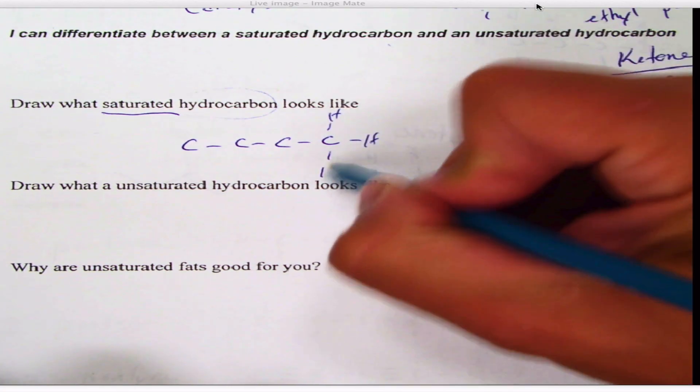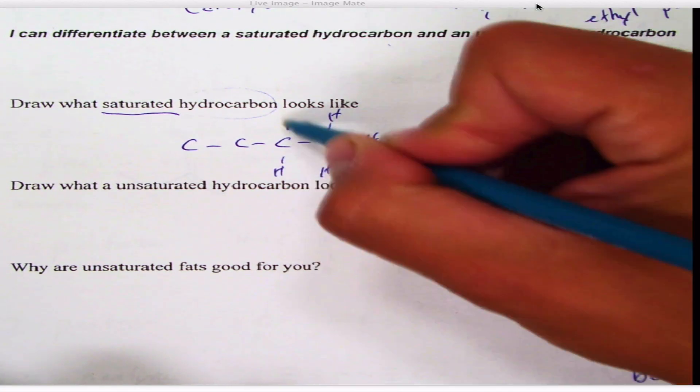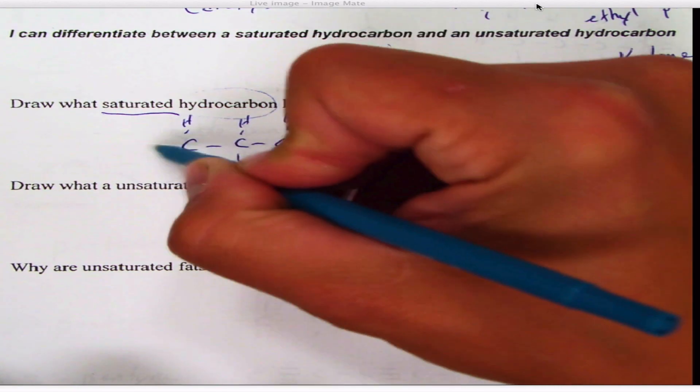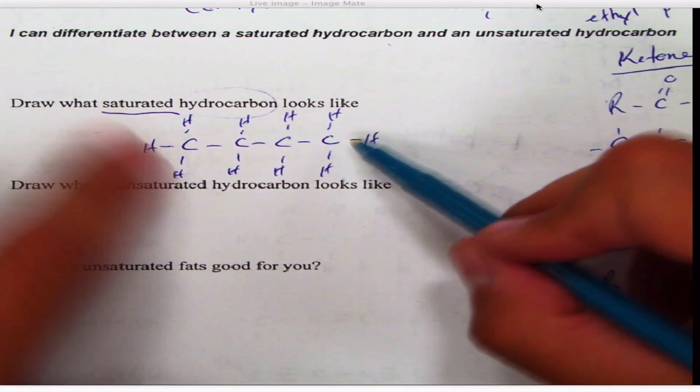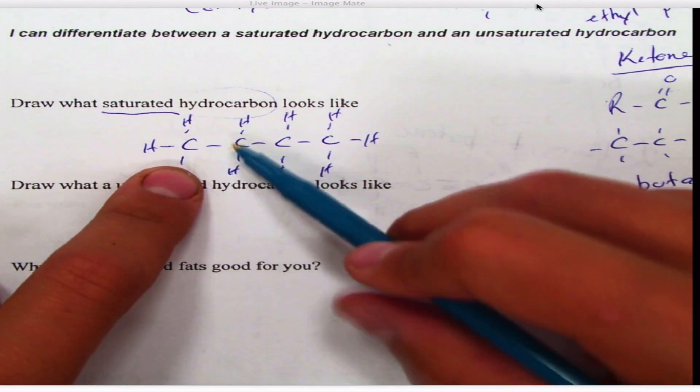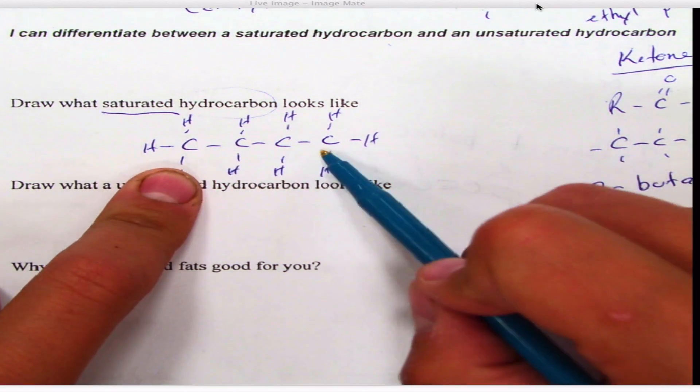So remember from a long time ago that hydrogen wants to bond four times, and then a hydrocarbon—that's always going to be a carbon-hydrogen mixture. Notice we have maximum amount of hydrogens they can fit. A quick and easy way to tell if it's saturated: if you only have single bonds between your carbons, you have maximum of hydrogens. This is saturated.